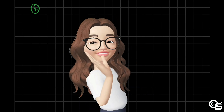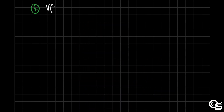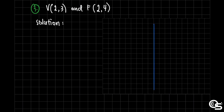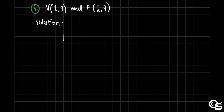Let us now proceed to example number 3. We have the given vertex at (2, 3) and focus at (2, 4). Since the vertex is at (2, 3) and the focus is at (2, 4), it means it traveled one unit in terms of y going up. So the focal distance, denoted as p, will now be 1.